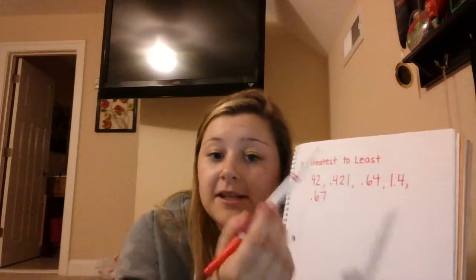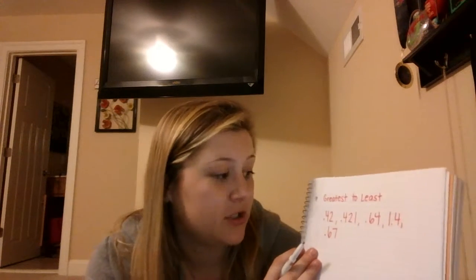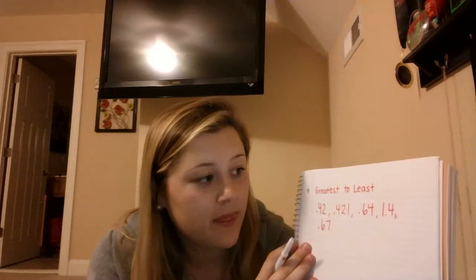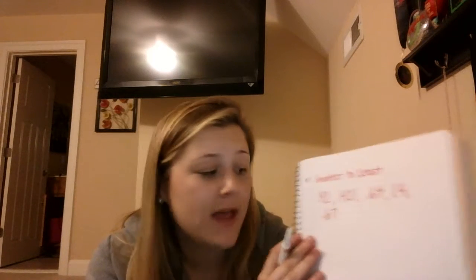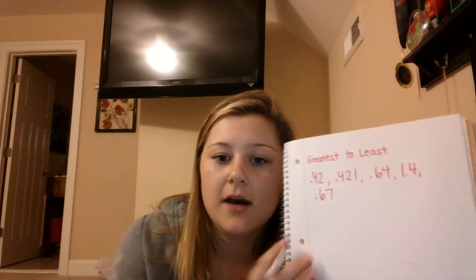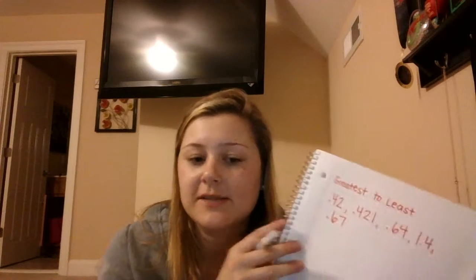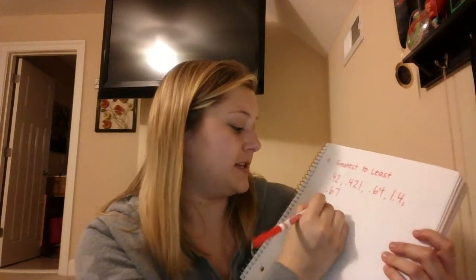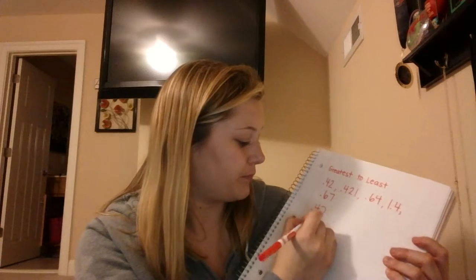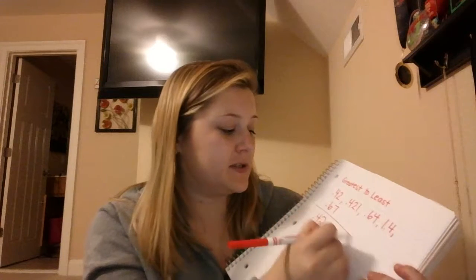The other thing we worked on this week was ordering decimals. We are going to order decimals from greatest to least and least to greatest, but the example I wrote down was greatest to least. So we have all these numbers: 42 hundredths, 421 thousandths, 64 hundredths, 1 and 4 tenths, and 67 hundredths. The key here is stacking our numbers and making sure our decimals always stay lined up. I'm going to stack them — it doesn't matter what order you stack them in — and making sure our front numbers and our decimals stay lined up.